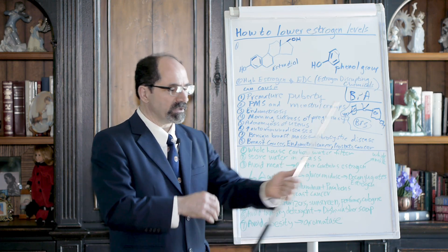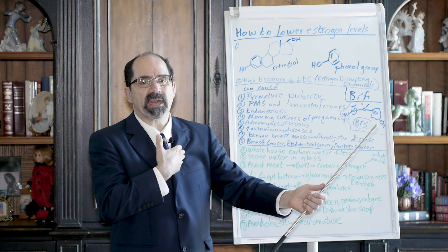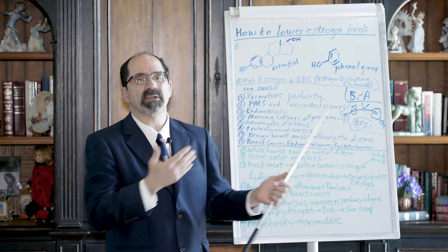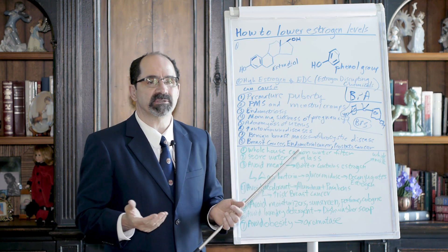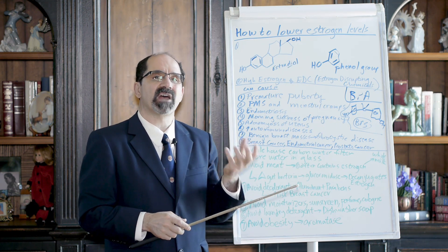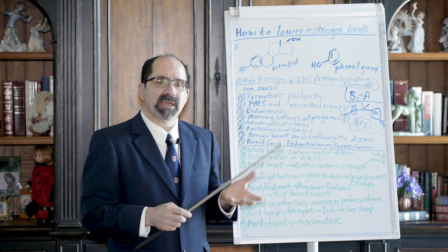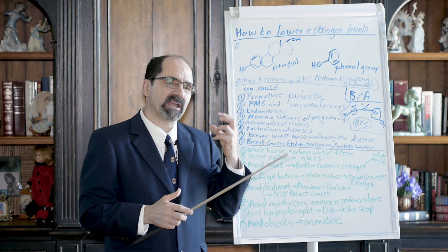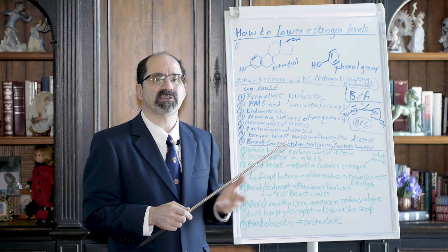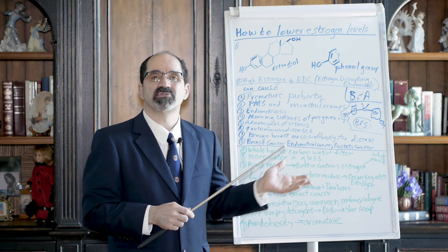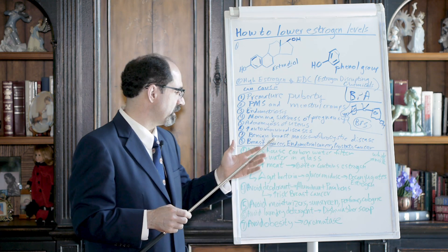The thing about deodorant is the lymphatics between the breast and the armpit are shared. So if you're putting estrogens in your armpit, you're increasing your risk of breast cancer. Aluminum itself is an antiperspirant but it's a metalloestrogen and somehow stimulates the estrogen pathway to cause proliferation of breast ductal cells. In addition, there's typically going to be some type of preservative in there that's estrogenic, like a paraben.